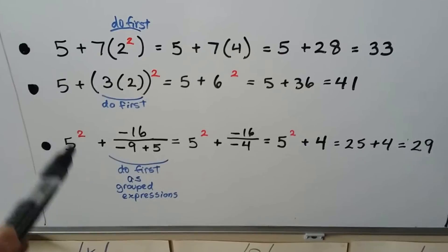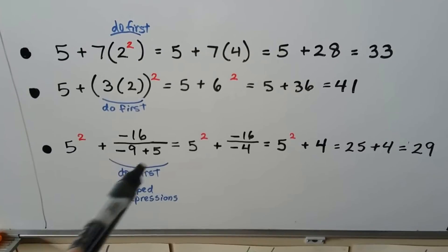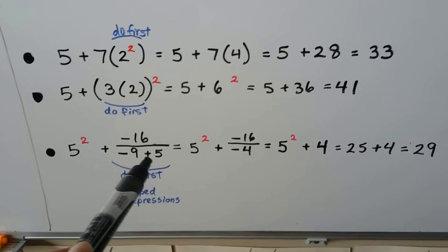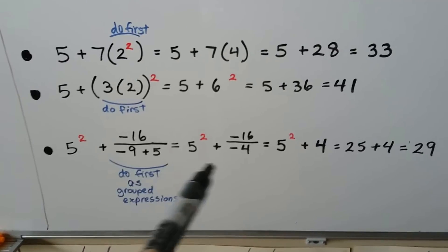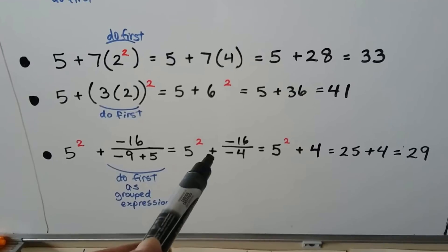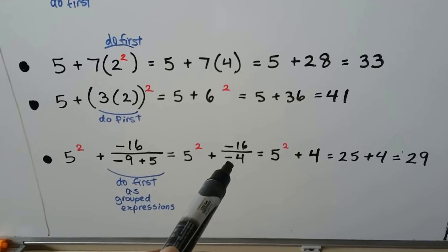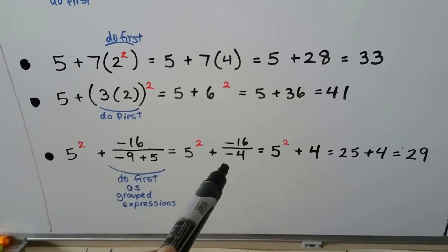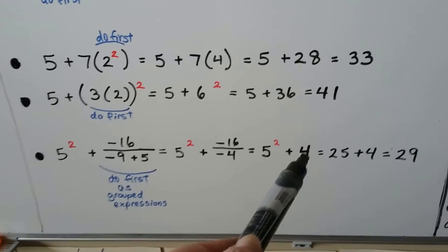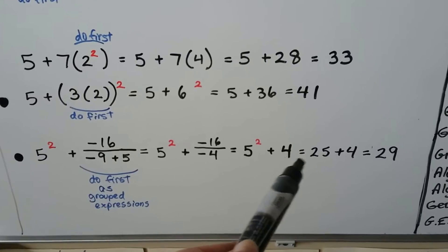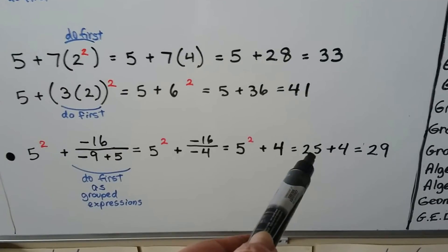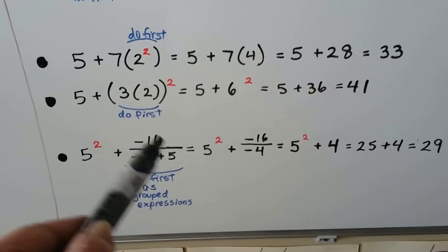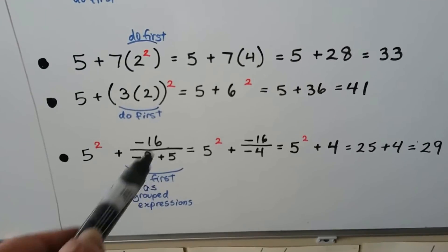When we see something like this, we would do the fraction first. We have negative 16 divided by negative 9 plus 5. Negative 9 plus 5 is negative 4. That means we have 5 squared plus negative 16 divided by negative 4, which is positive 4 — two negatives. That means 5 squared plus 4. Now we do the exponent: 5 times 5 is 25. We have 25 plus 4, which equals 29. We do this first because it's a grouped expression.